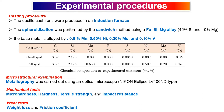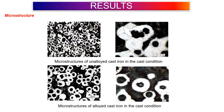Metallography was carried out using an optical microscope. Tests used to characterize specimens are microhardness, hardness, tensile strain, impact resistance, weight loss, and friction.